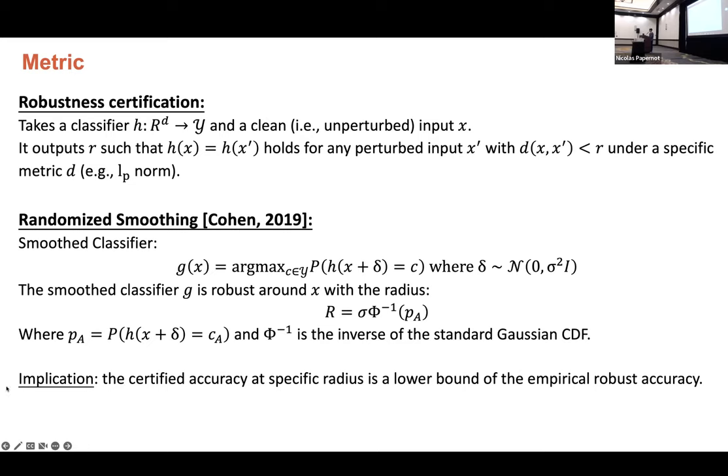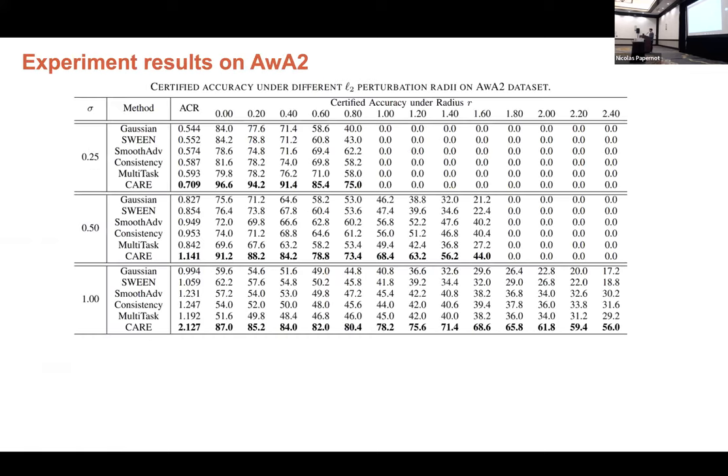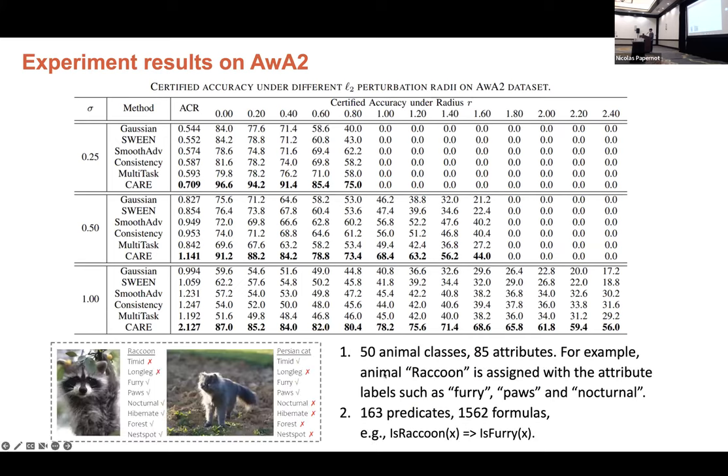So we only report certified accuracy for our experiments. And here is one experiment on dataset called AwA2. And this is a standard image dataset, which contains 50 animal classes and 85 attributes. And based on this dataset, we can define about 200 predicates and about 500 formulas. And the final result shows that our method could improve certified robustness about 20 to 30%, which means the knowledge will help a lot.